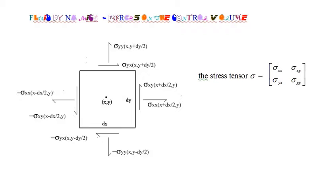Just as for an elastic object, the internal forces in a fluid create internal stresses in the fluid that we will represent by a stress tensor sigma, just as we did for stressed elastic objects. Given sigma, the tractions on each side of a control volume are as shown in the diagram, and that's the same diagram we used in our analyses of elastic objects.